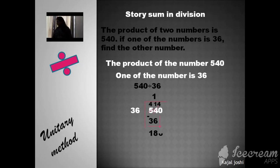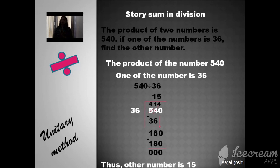Now bring down 0. Now 36 times 5 is 180. Now 180 minus 180 is 0. So answer is 15. So the other number is 15. Now if you multiply 15 times 36, you will get 540.